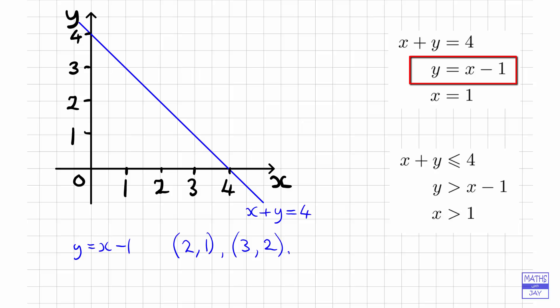If x is 4 then y will be 3. So those points are going to be 2, 1, then 3, 2, and 4, 3. Then we just join those points and extend it in both directions.